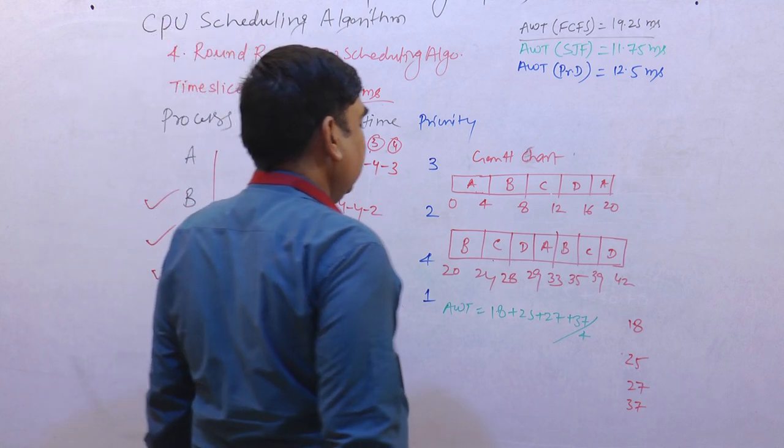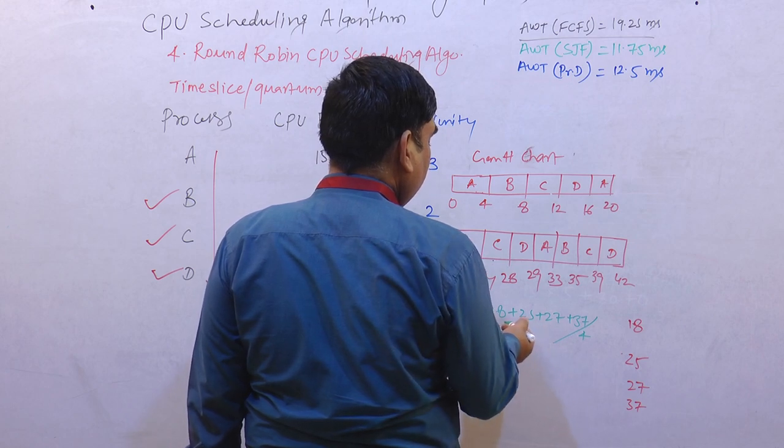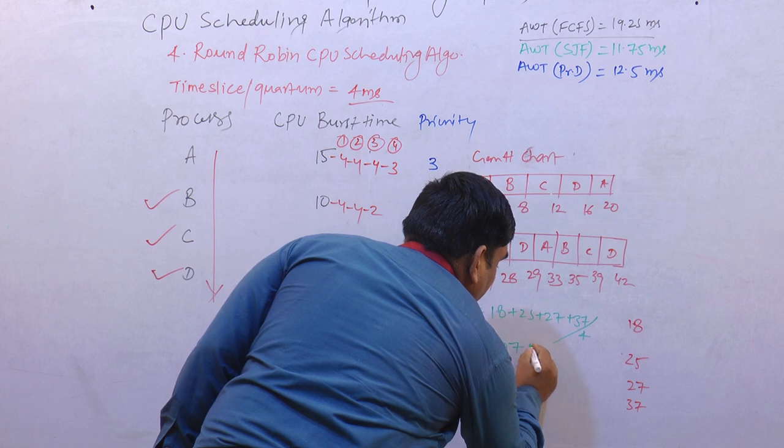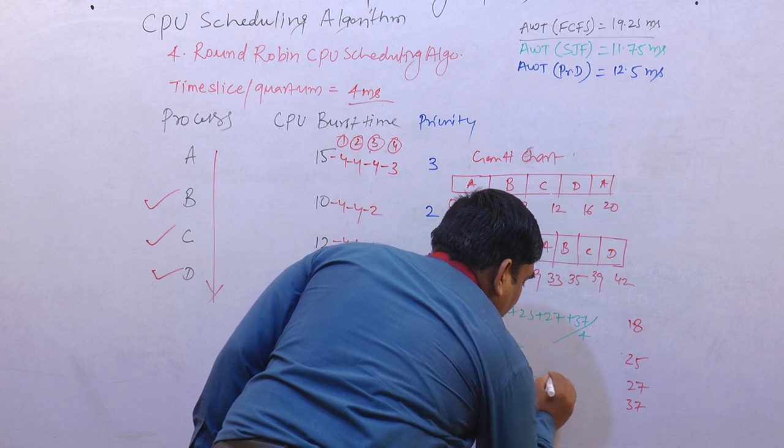The sum is 107. So 107 divided by 4 gives us the average waiting time.